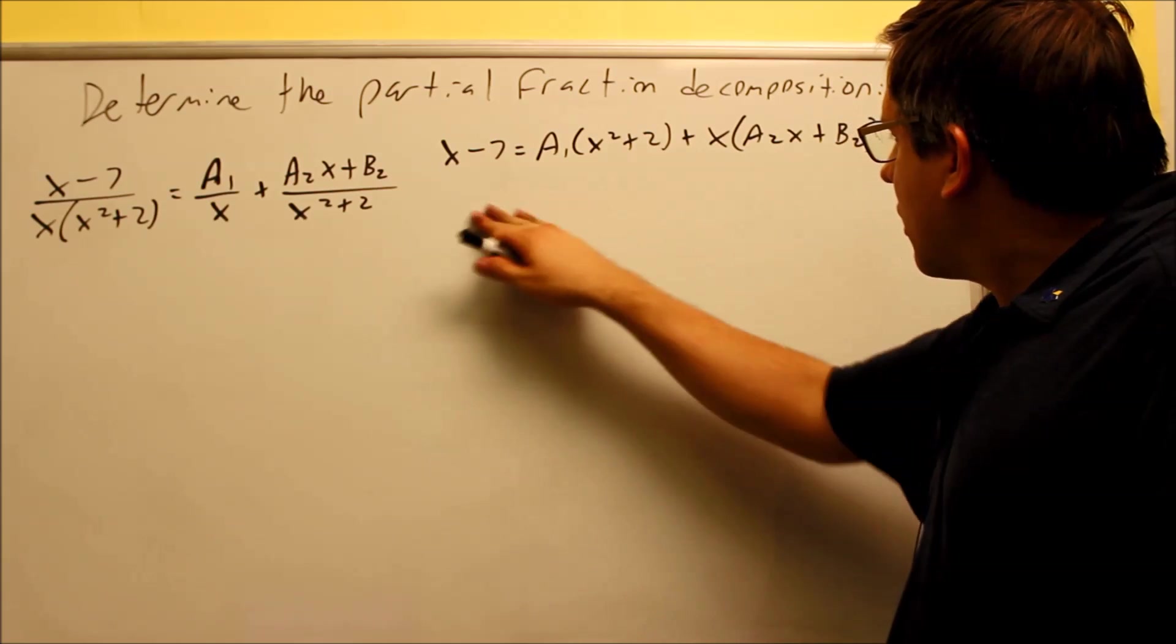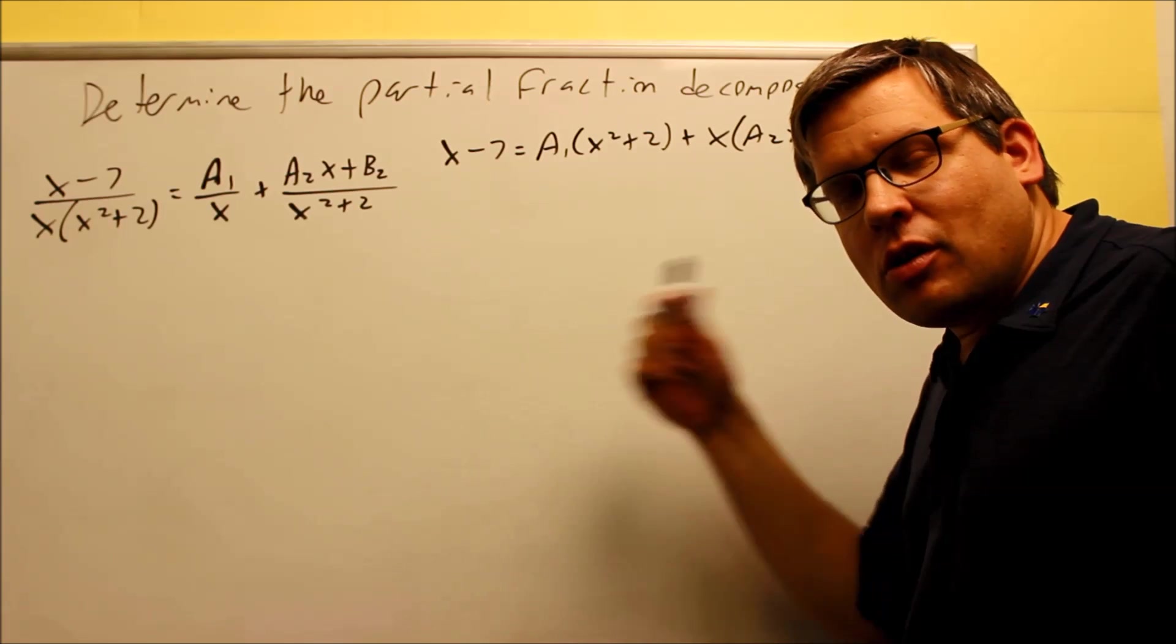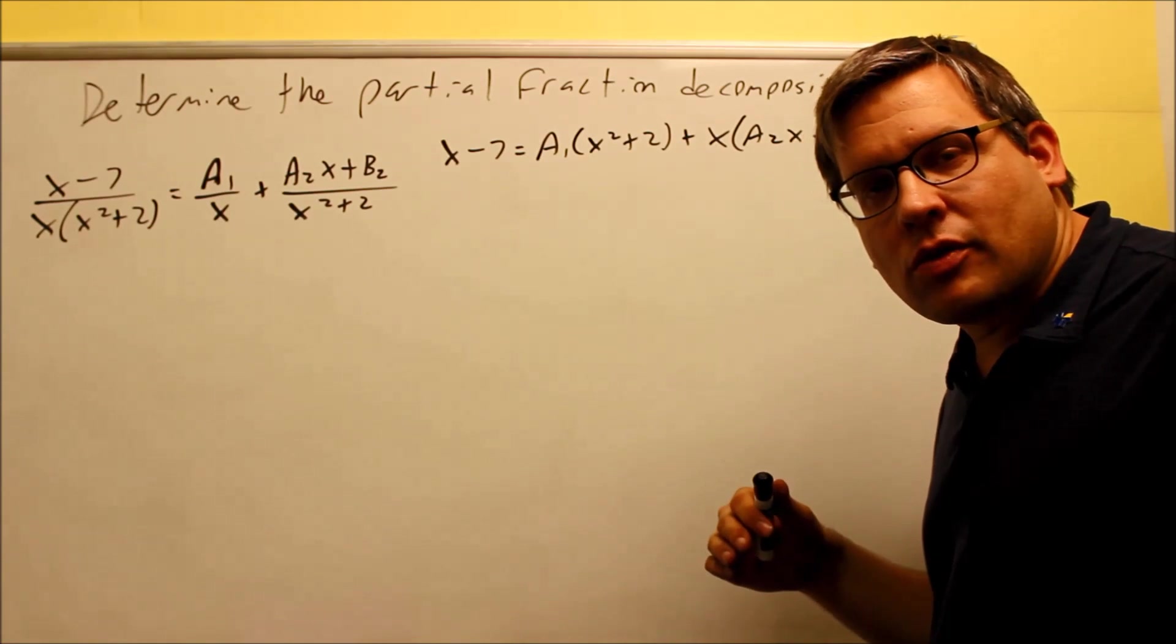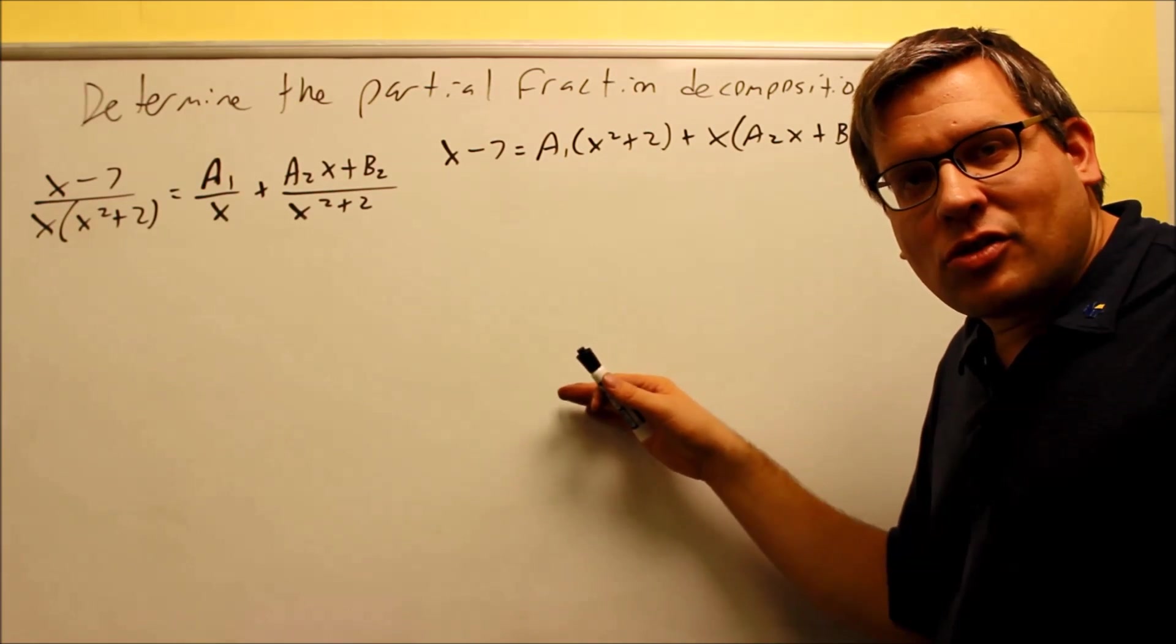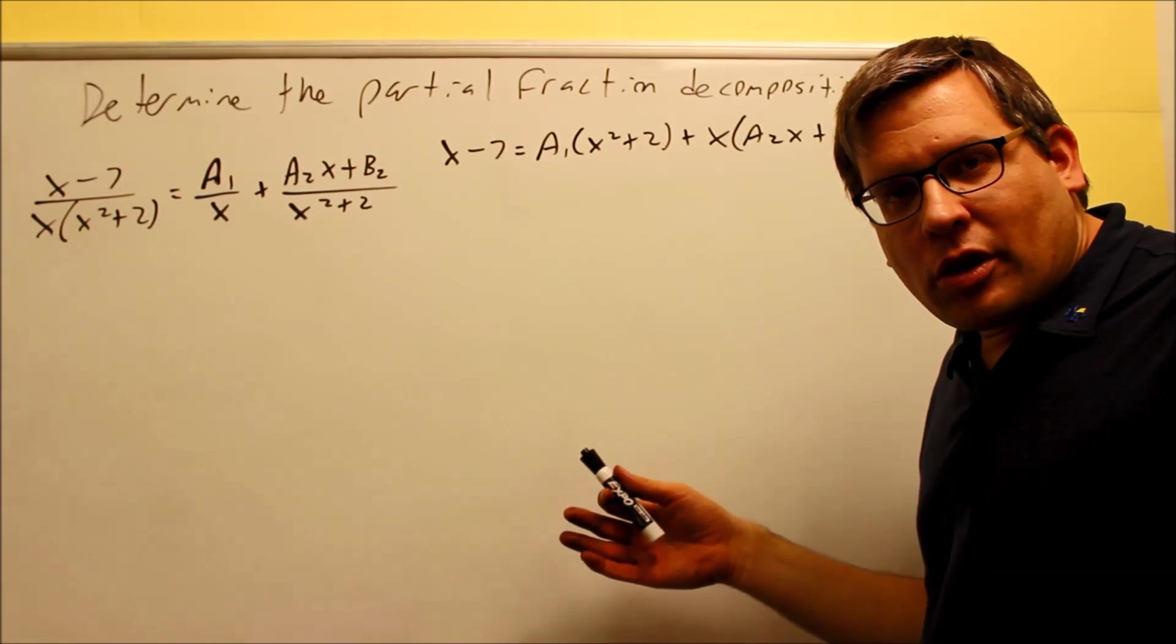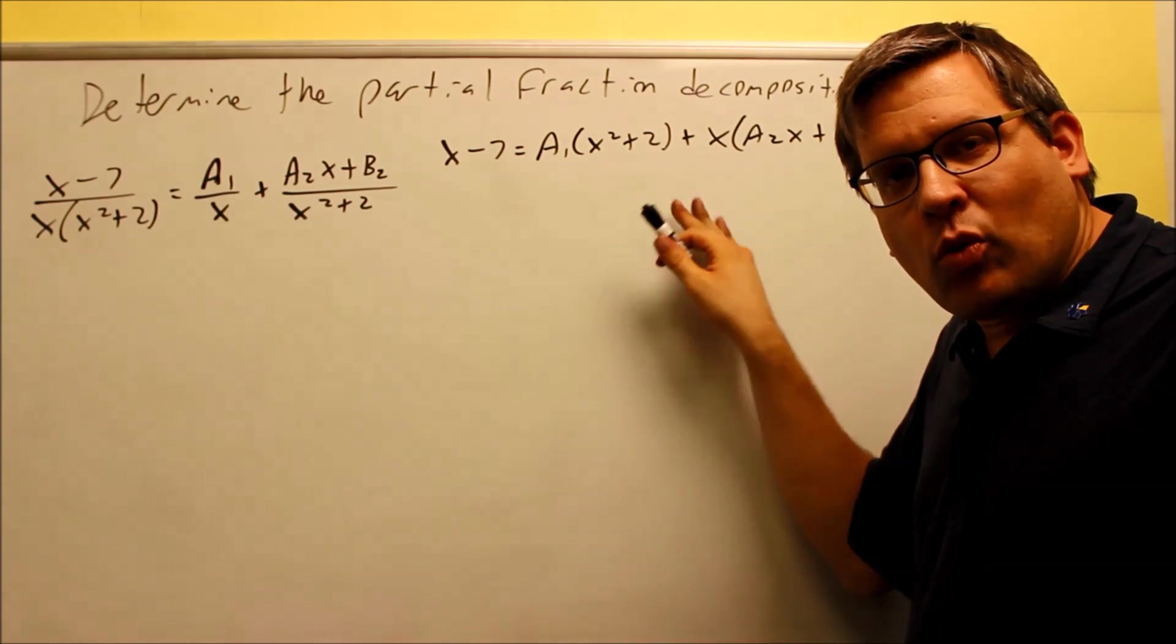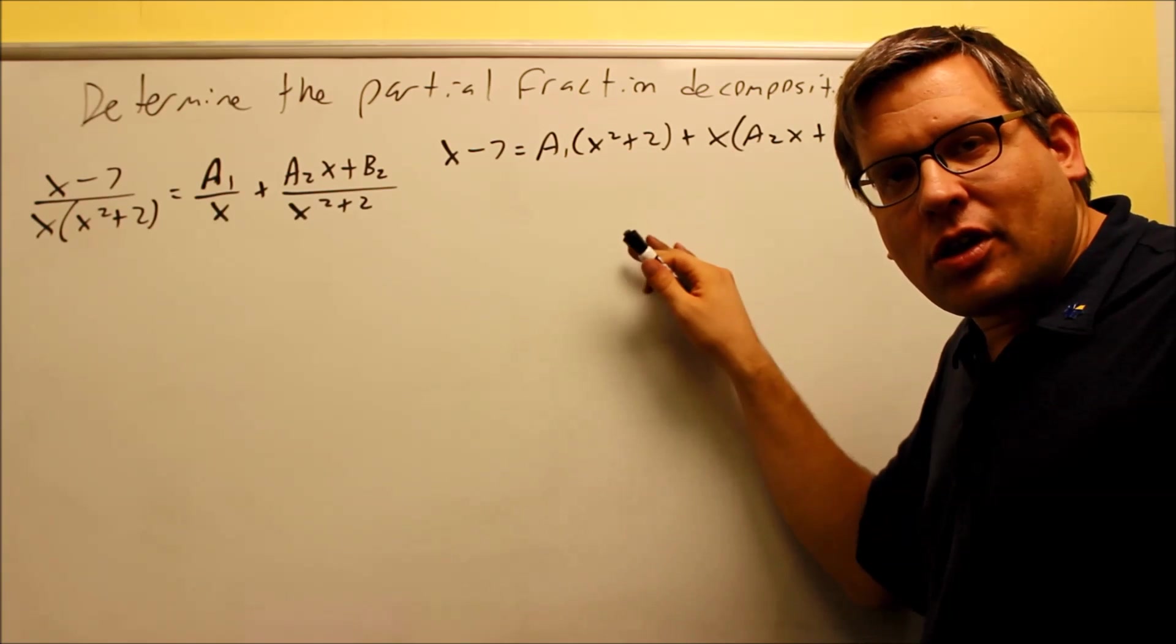Okay, so here is our equation and now we're at the point where we've got to decide whether we want to use convenient values method or equating coefficients. Now most of the problems we've done in this section so far, we've been using the convenient values method and generally that's going to be easier for a lot of problems. So the question is, is there ever a time where a convenient values method is not going to be the most convenient? Actually, this example here is one that will work out where the equating coefficients is actually going to be way easier than doing convenient values.